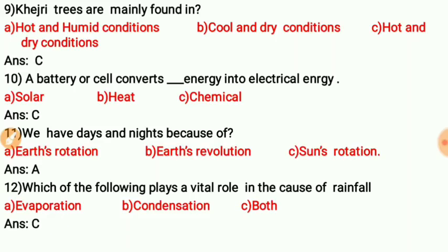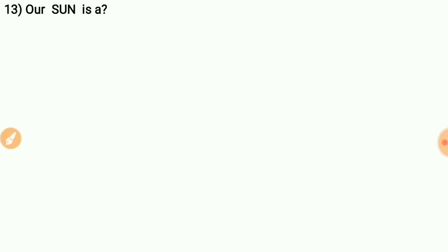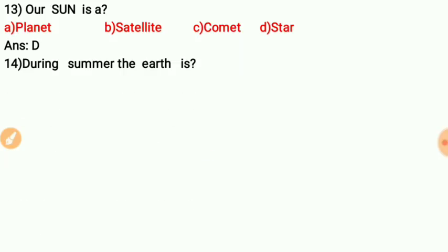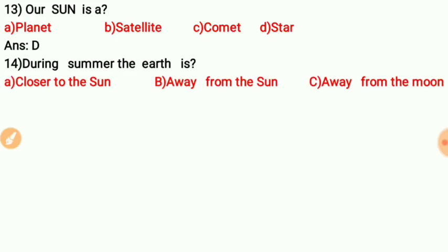Question twelve: Our sun is a — planet, satellite, comet, or star? The sun is a star. Question thirteen: During summer, the Earth is — closer to the sun. The correct answer is A — closer to the sun.